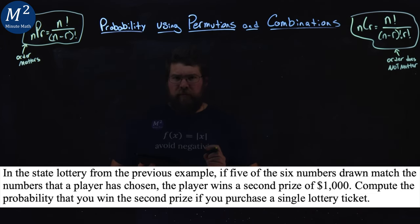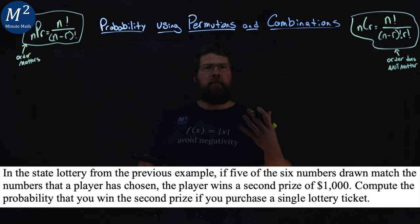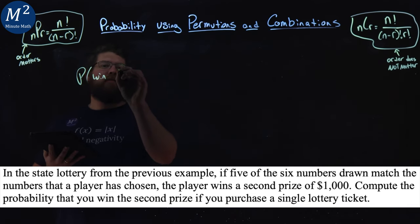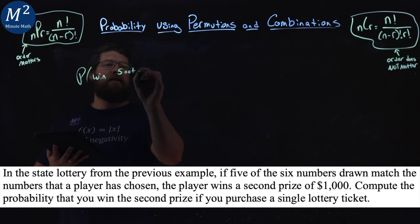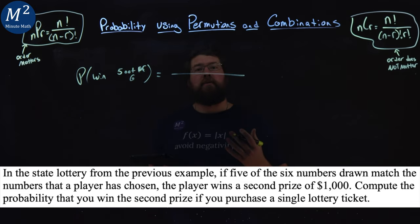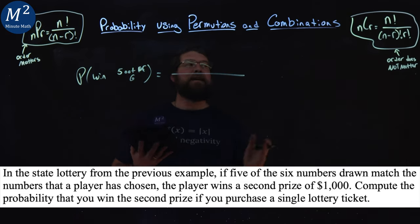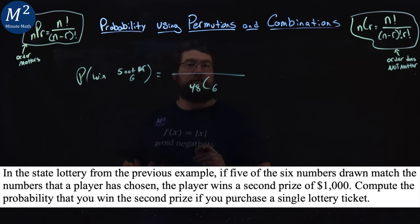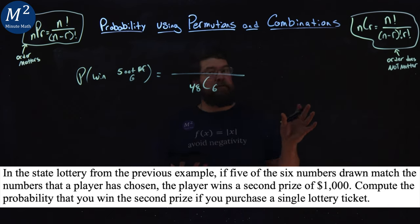Let's talk about this. If you remember from before, this is five out of six numbers. The total number of ways to order this was 48 choose 6. The 48 different numbers, we're choosing six of them, where order doesn't matter.